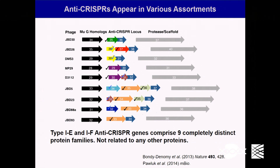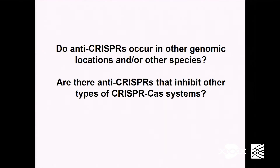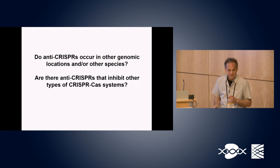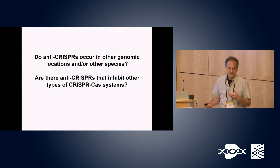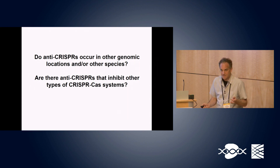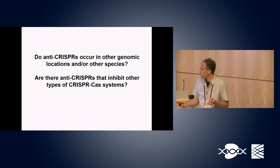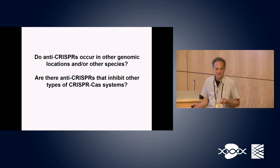We wondered where these genes came from — they don't look like anything else in genomes. At this point we had discovered nine families of anti-CRISPRs, but they were all in a closely related group of Pseudomonas phages and didn't do anything against CRISPR systems outside the Pseudomonas systems. So we began wondering: can we find anti-CRISPRs in different organisms?